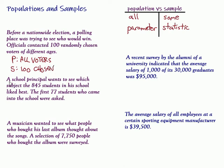Let's take a look at this next one. A school principal wants to see which subject the 845 students in his school liked best. The first 77 students who came into the school were asked. So the population, that's everyone in this group, is the people at the school. And this time they give us the number of students at the school.